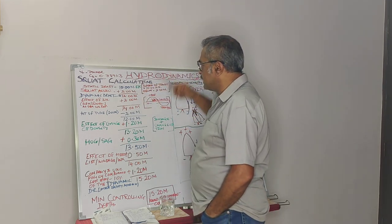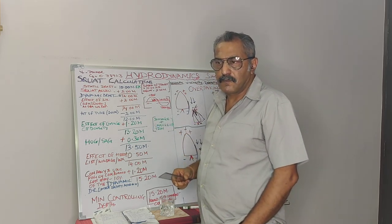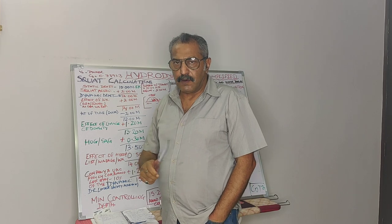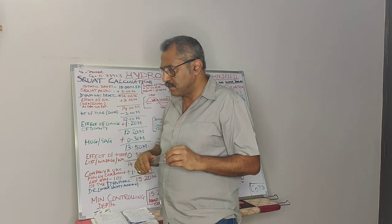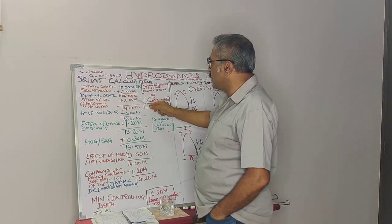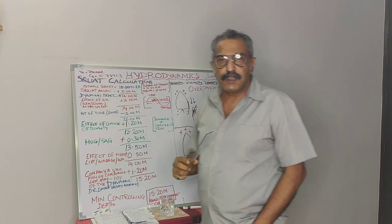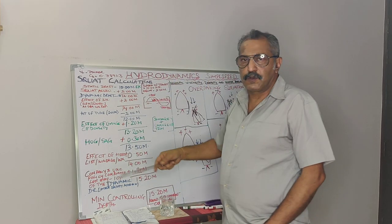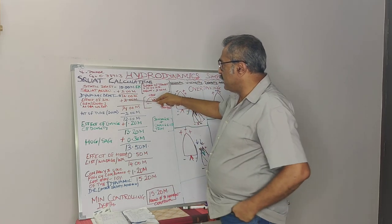When I take 10 meters as static draft and add 2 meters squat to that, my dynamic draft is 12 meters. Let's not forget that with squat there will also be a change of trim, which I am not going to discuss right now so as not to interfere with the lecture — I will come back to that later. So, starting with it: static draft 10 meters, squat allowance 2 meters, at 10 knots — therefore the dynamic draft is 12 meters.